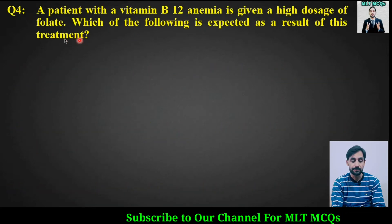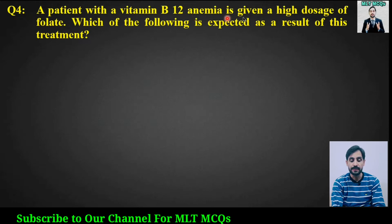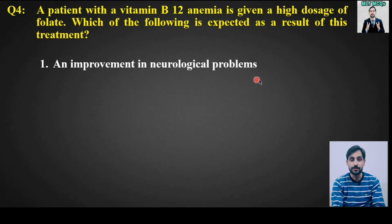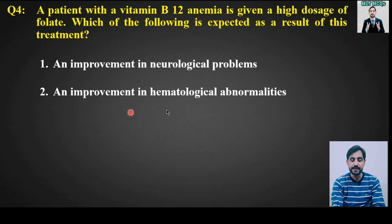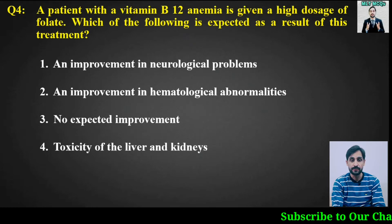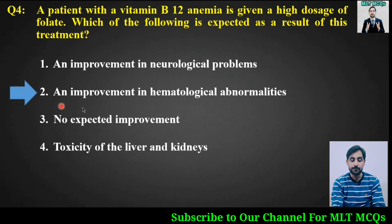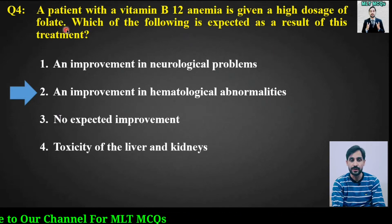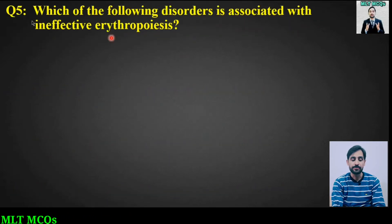MCQ number 4: A patient with a vitamin B12 deficiency is given a high dosage of folate. Which of the following is expected as a result of this treatment? Options are an improvement in neurological problems, an improvement in hematological abnormalities, no expected improvement, or toxicity of the liver and kidneys. The right answer is option number 2: an improvement in hematological abnormalities will occur after a high dosage of folate.